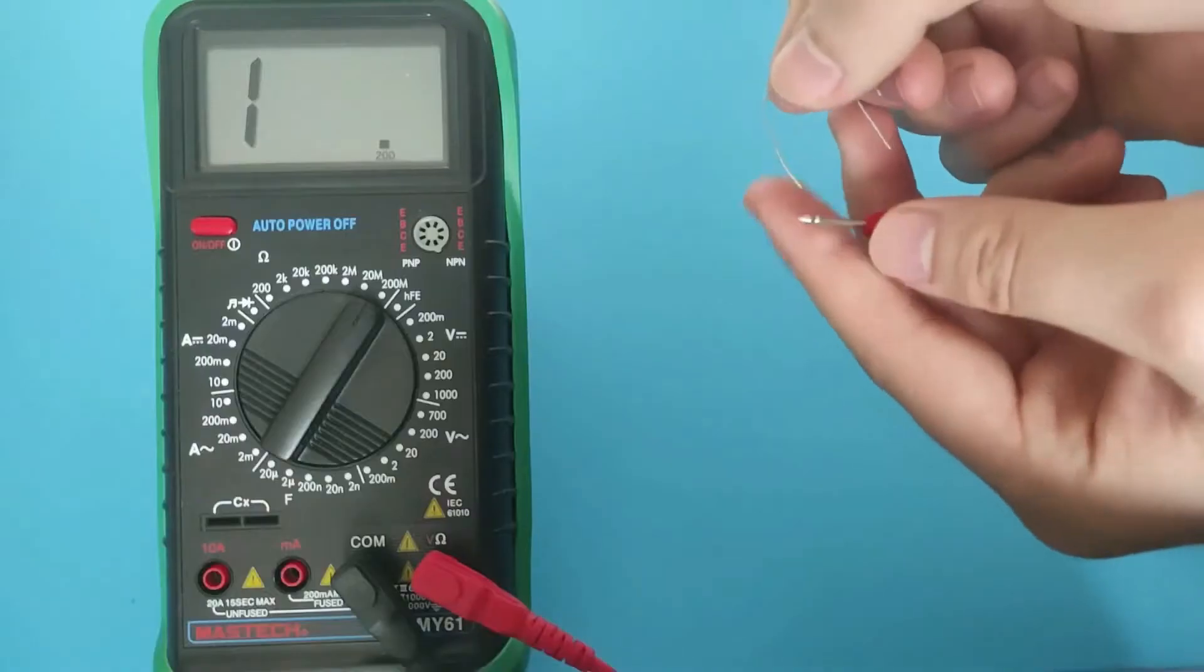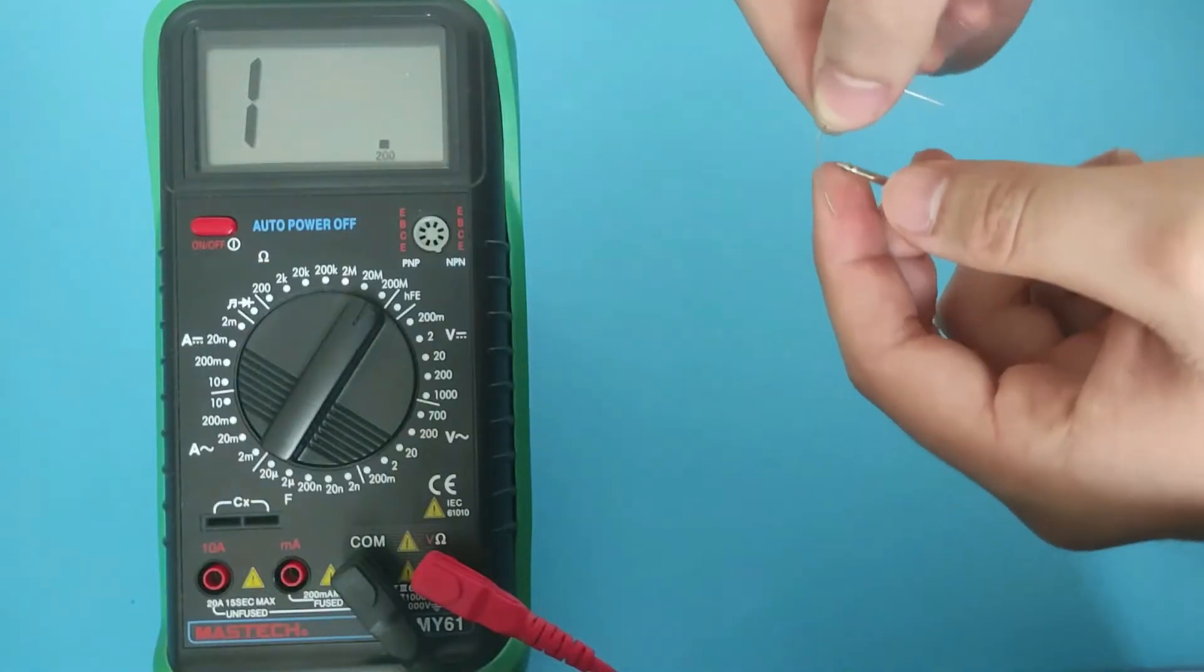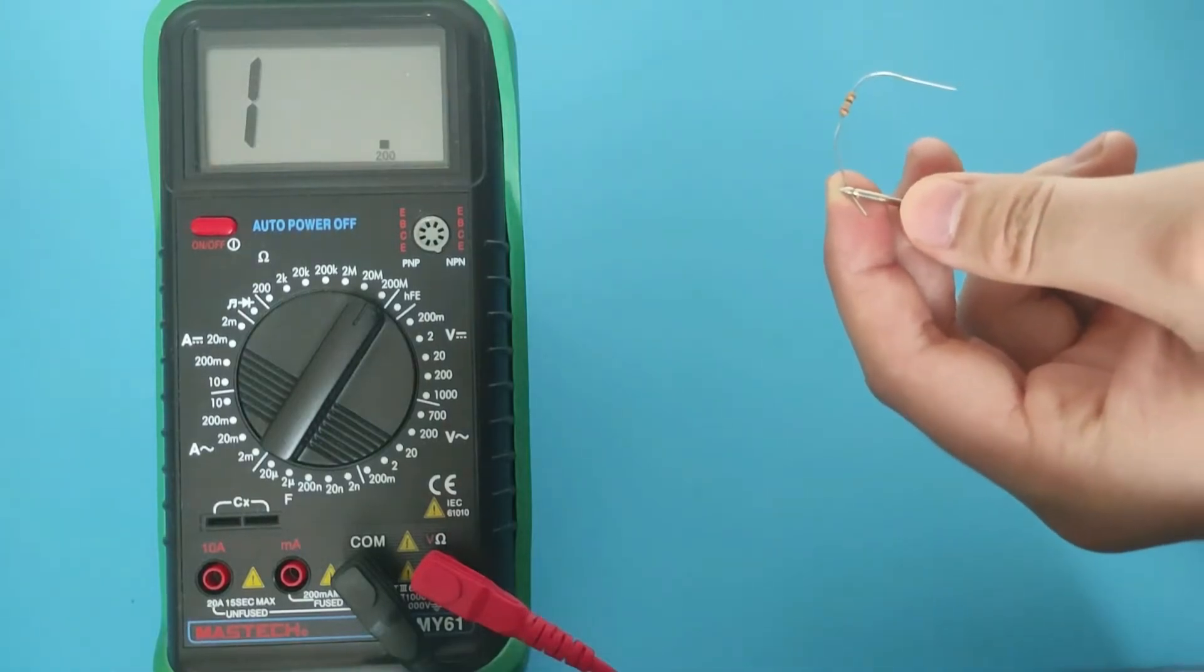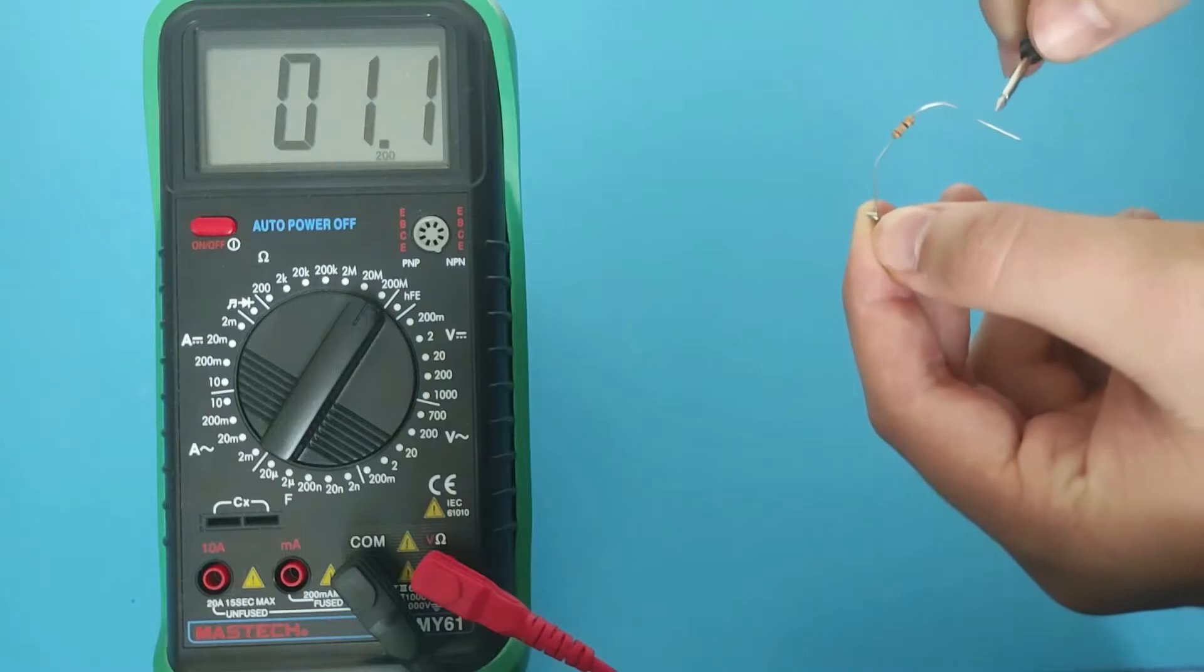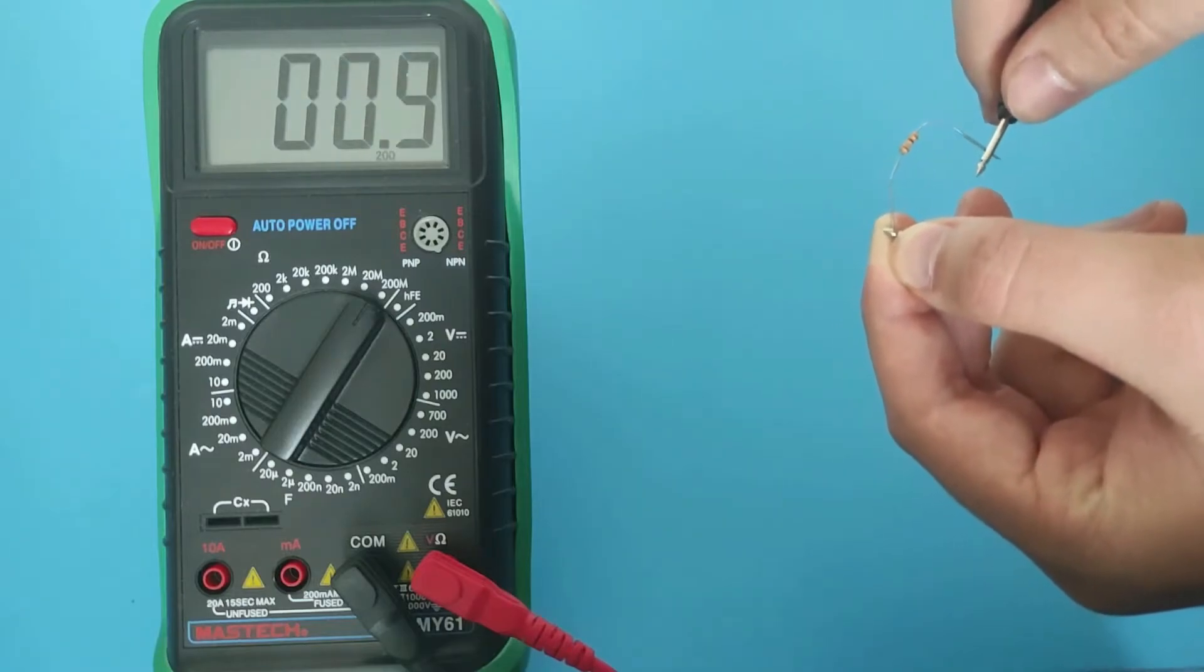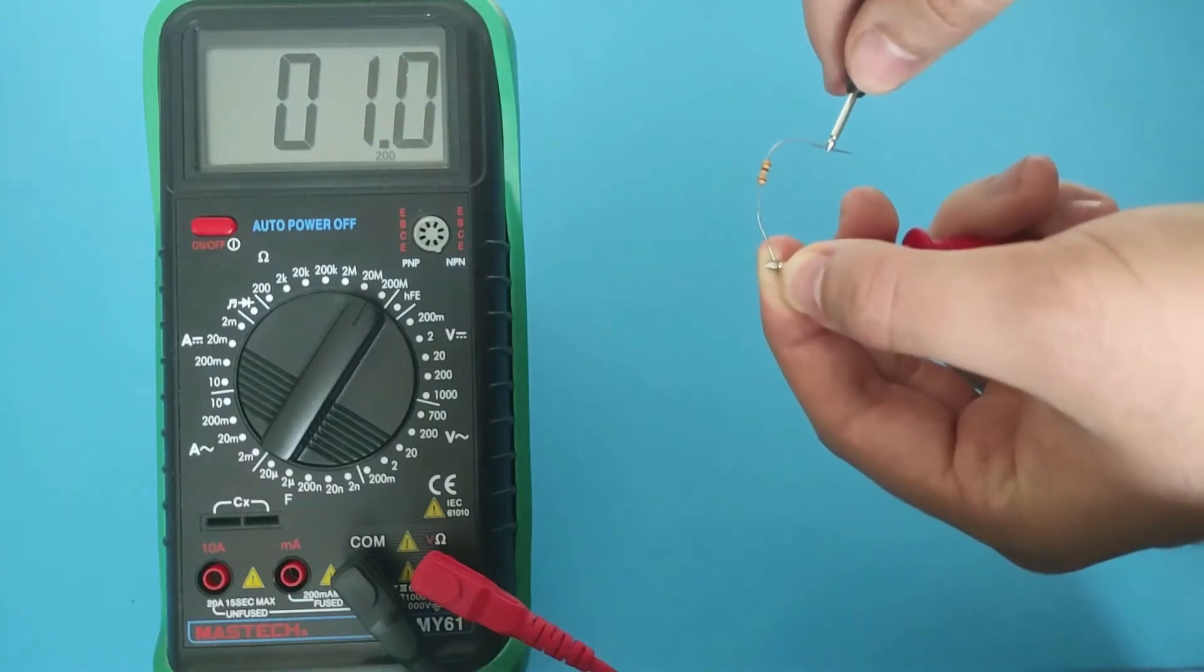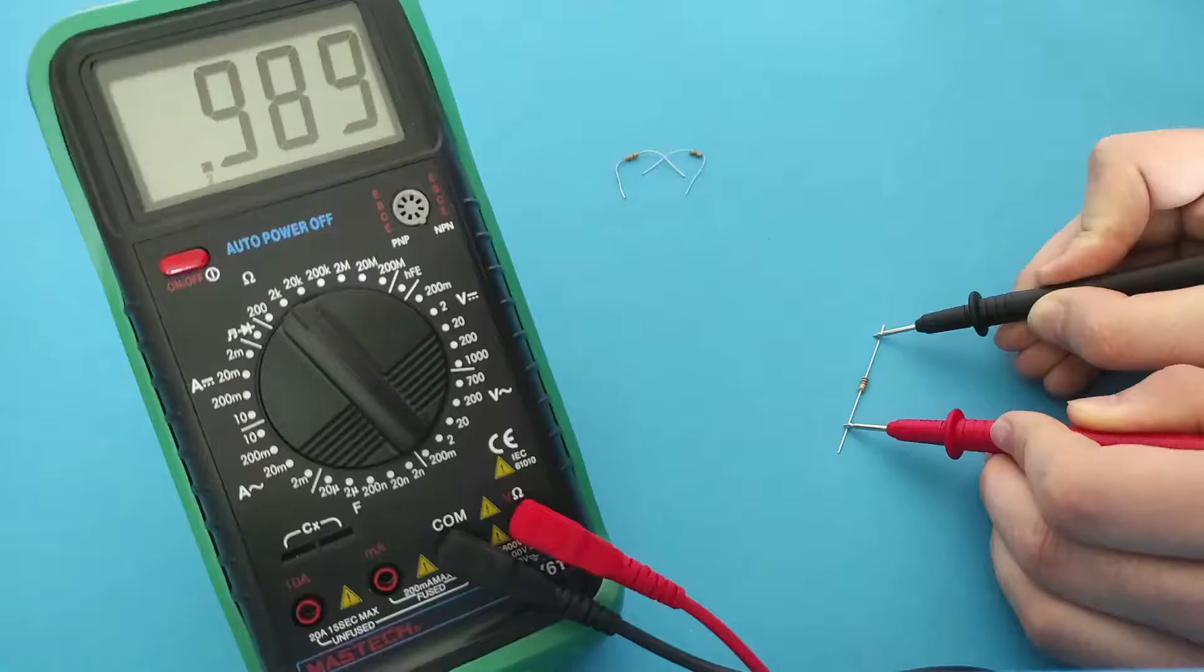This is the easiest thing. Take a resistor, adjust the resistance to the highest. Slowly lower the resistance to a smaller one until you have three digits on the screen. Don't touch both ends of the probe when measuring resistance, because that's how you're going to count your resistance. The number you see on display is the resistance number.